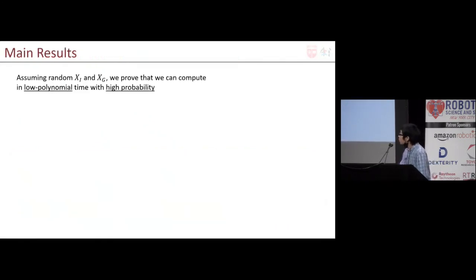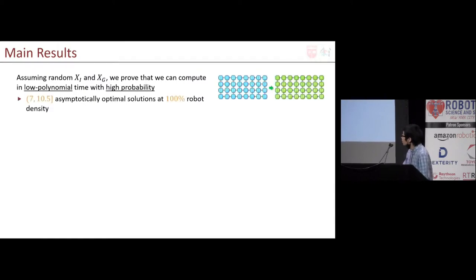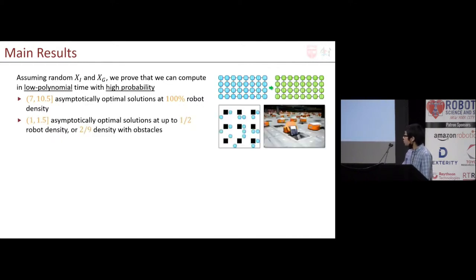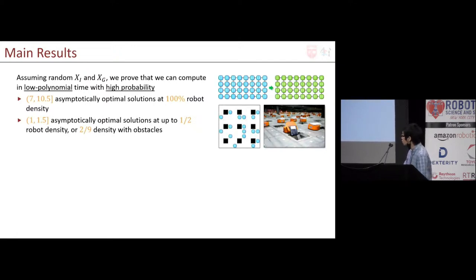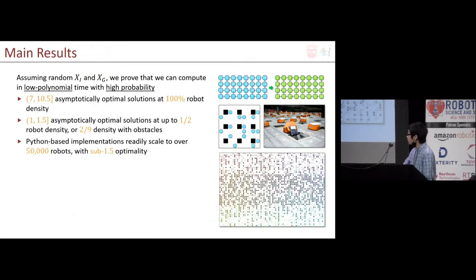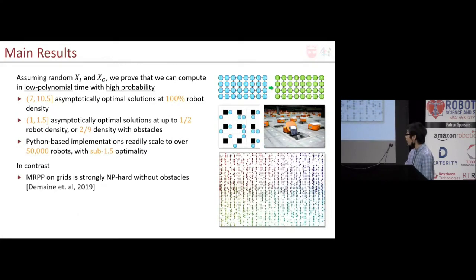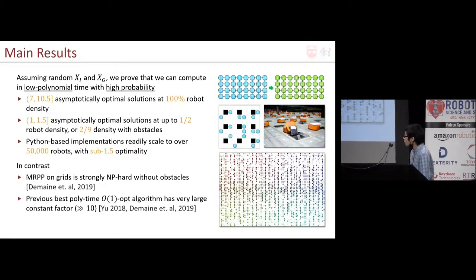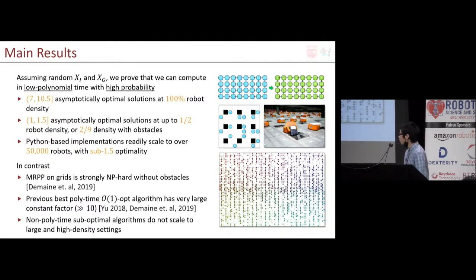To summarize the result: assuming random XR and XG, we proved that in low polynomial time and with high probability, we can compute 7-to-10.5 asymptotically optimal solutions at 100% robot density, and 1-to-1.5 asymptotically makespan-optimal solutions at up to half robot density or 2/9 robot density with regular obstacles. Our algorithms scale to over 50,000 robots with sub-1.5 makespan optimality. In contrast, MRPP on grids is strongly NP-hard even without obstacles. Previous polynomial-time O(1)-optimal algorithms have very large constant factors, while non-polynomial time-optimal algorithms do not scale well to large dense instances.